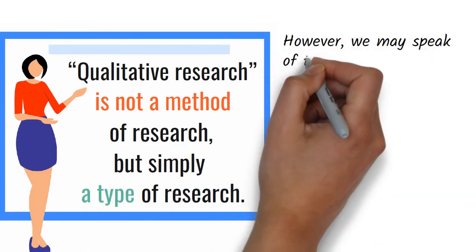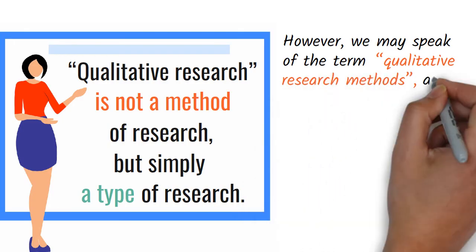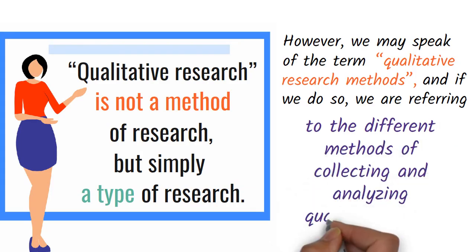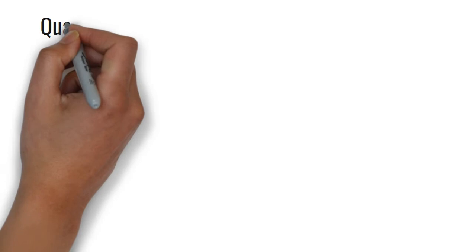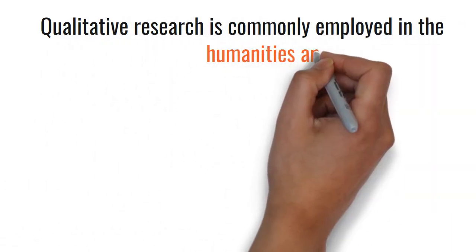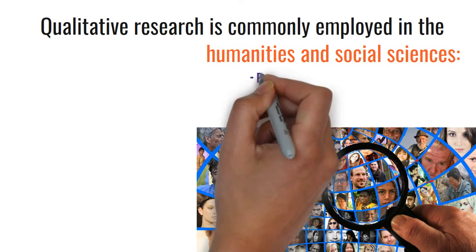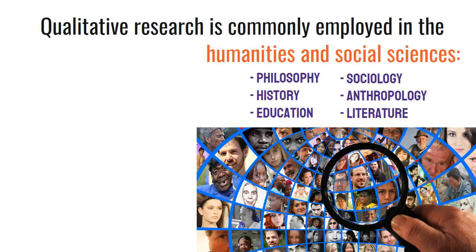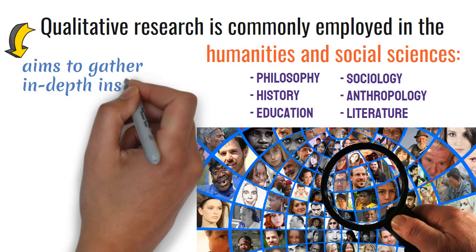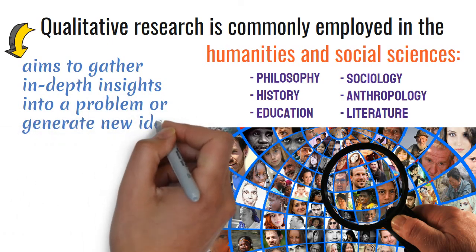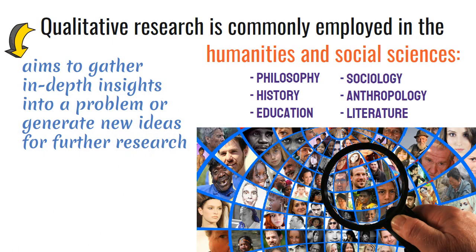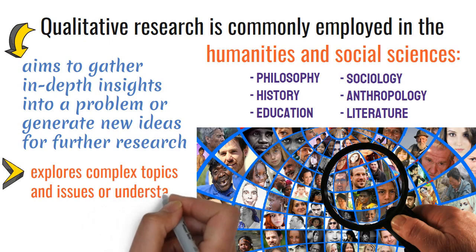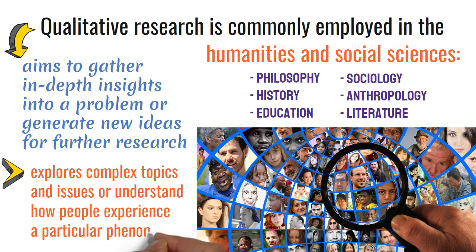However, we may speak of the term qualitative research methods, and if we do so, we are exactly referring to the different methods of collecting and analyzing qualitative data. Qualitative research is commonly employed in the humanities and social sciences, in subjects such as philosophy, history, education, sociology, anthropology, and literature, with the aim of gathering in-depth insights into a problem or generating new ideas for further research. This type of research is also used to explore complex topics and issues or understand how people experience a particular phenomenon.